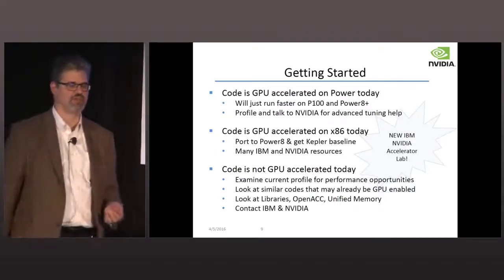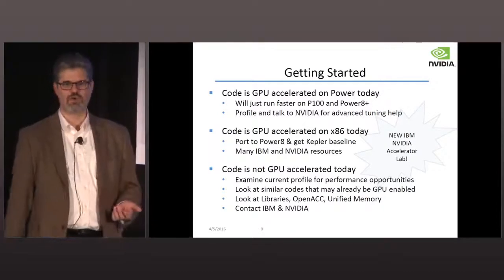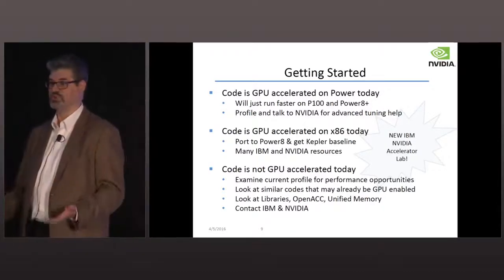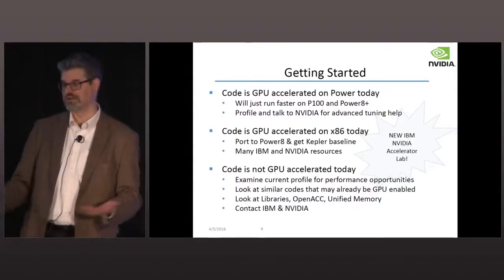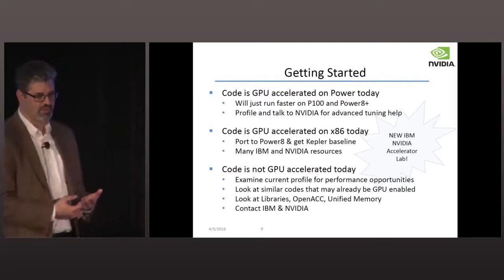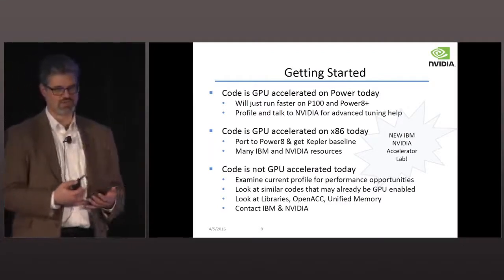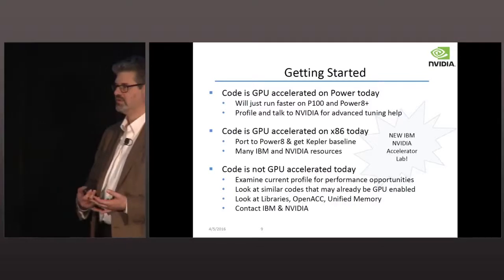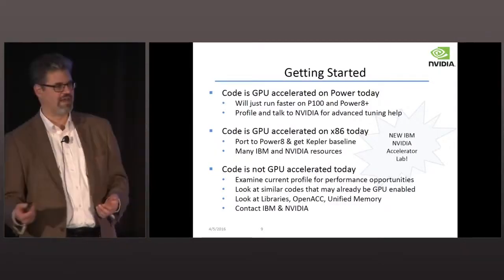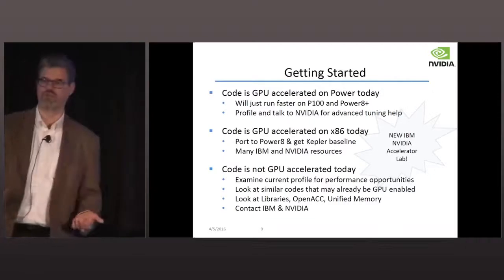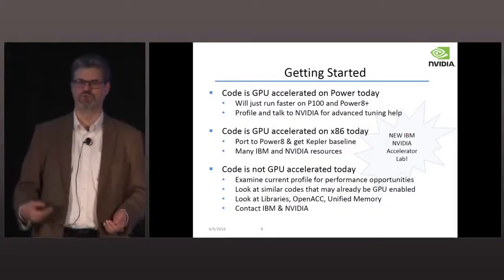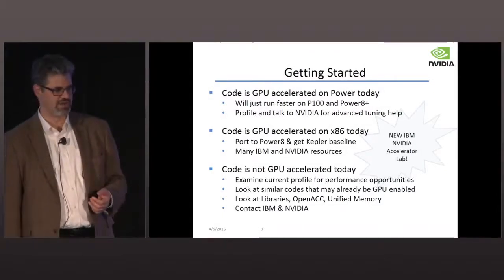If your code is not accelerated today, think about why not. If your problem is really not suited for parallelism and there's no parallel work there, don't port. But you can look at other codes — in most industries and fields of science, there's another code that does something similar, and many may be GPU-accelerated. That may give you hints about whether it makes sense to accelerate your own code.